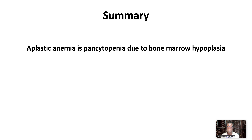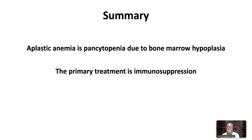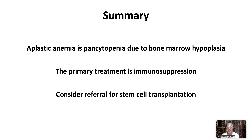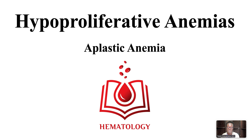In summary, aplastic anemia is pancytopenia due to bone marrow hypoplasia. The primary treatment is immunosuppression. In select patients who are appropriate candidates or refractory to therapy, consider referral for stem cell transplantation. This ends our video on hypoproliferative anemia, aplastic anemia. Thank you.